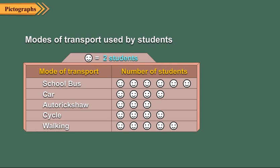From this pictograph, we can calculate the number of students using different modes of transport. Each symbol represents two students. There are six symbols against school bus. So, it means number of students using school bus is equal to six into two, which is twelve.